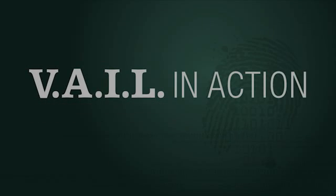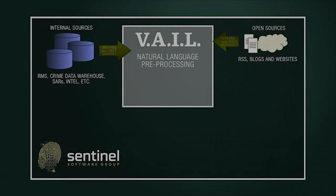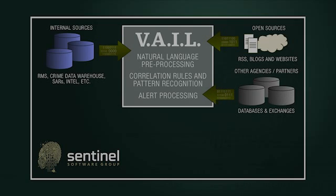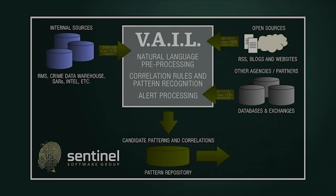Veil approaches problems the same way an experienced analyst would. It reads and evaluates both structured and unstructured data. It analyzes documents and incidents, breaking down and organizing information to find out who, where, what, and how incidents are happening. And then it uses modus operandi and other key characteristics to identify patterns based on rules that capture investigative best practices — just as an analyst would, only much quicker.